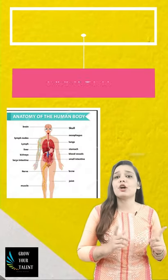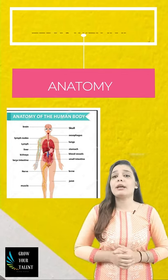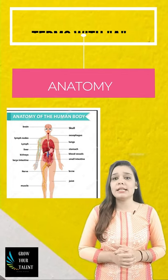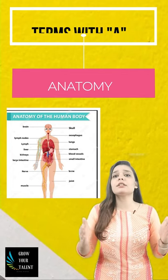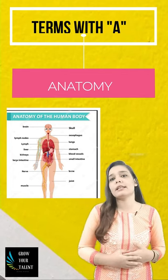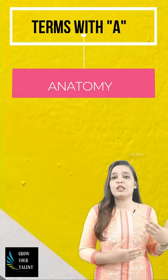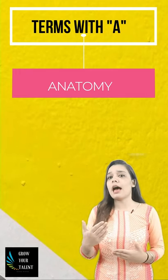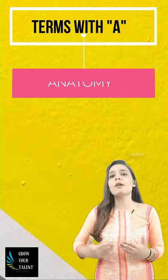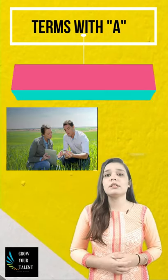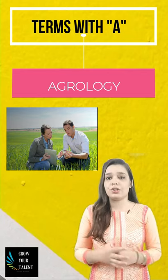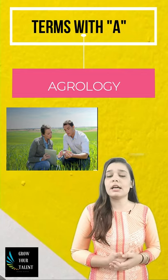Hello guys, today we're going to study about five terms starting with the letter A. First is anatomy — anatomy means the internal structure of an organism, be it plants, animals, or microbes. Second word is agrology — it is the study of soil that deals with the production of crop.